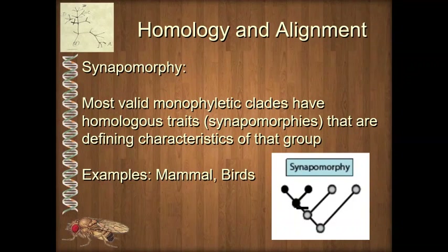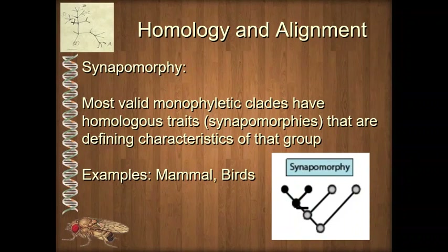Once we include the fossil record — particularly fairly recent finds of very well-preserved organisms — we realize feathers is not a synapomorphy for birds. Feathers were derived much earlier; most scientists now think all theropod dinosaurs had feathers at one stage of their life. So feathers becomes a synapomorphy for that larger group including birds, but not for birds themselves. When we say synapomorphy, we need to define a character and a group — if all organisms in that group have it and no others outside do, then it's a synapomorphy.